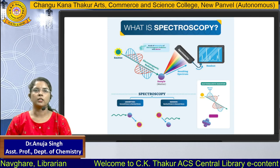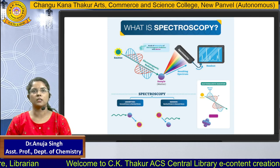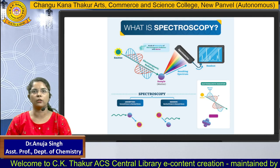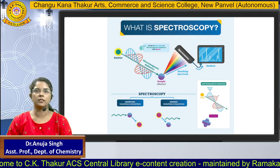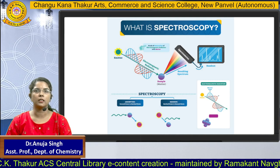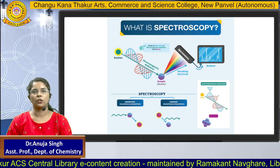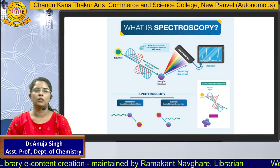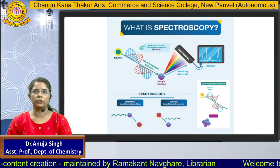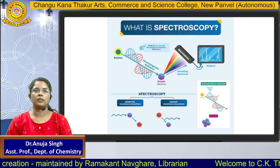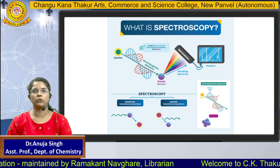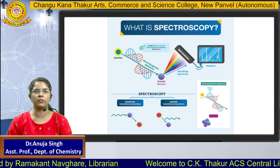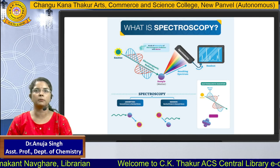First, what is Spectroscopy? It is a study of electromagnetic radiation that falls on a molecule and how it reacts. First, what is the electromagnetic radiation? It is the full range of light ranging from IR to NMR to microwave rays. Light travels in two ways — it behaves as a wave and also as a particle.